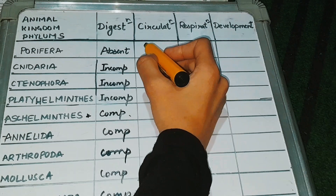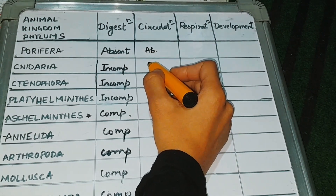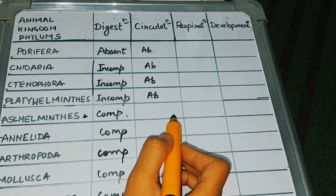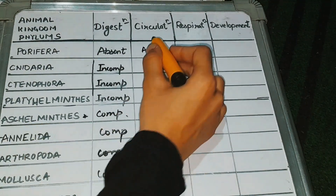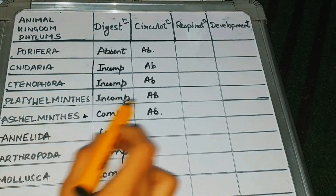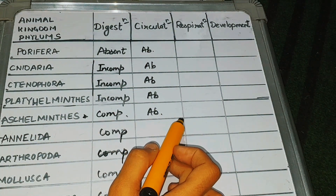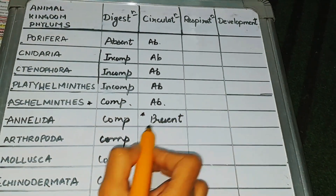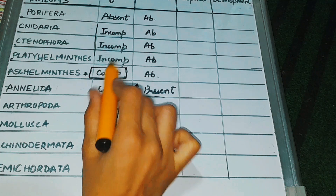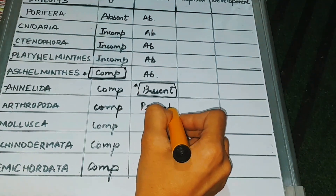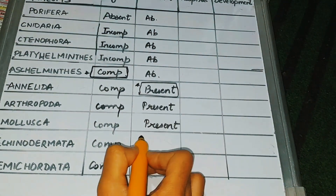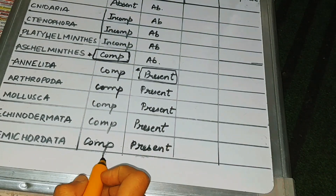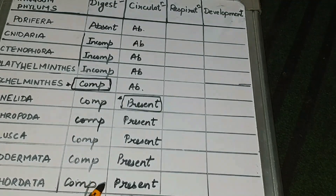Next topic is circulation. In Porifera, Nideria, Tenophora, Platyhelminthus, and Ascalminthus also, circulation is going to be absent. Now from Annelids, circulation is going to be present — we will star-mark this phylum. As digestion was starting from Ascalminthus, here circulation is starting from Annelids. From Annelids, then Arthropods, Mollusca, Echinodermata, and Hemicordata all will have circulation present in them.